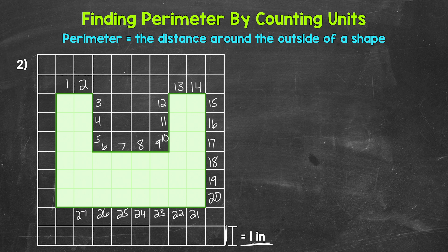Twenty-six, twenty-seven, twenty-eight, twenty-nine, thirty. We're almost there, 31, 32, 33, 34 inches. And that's the perimeter of this composite figure. So the perimeter equals 34 inches.